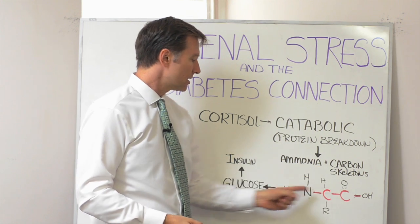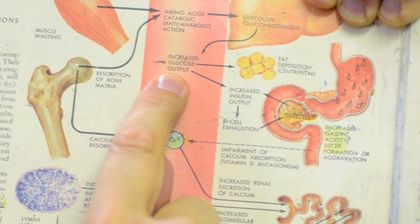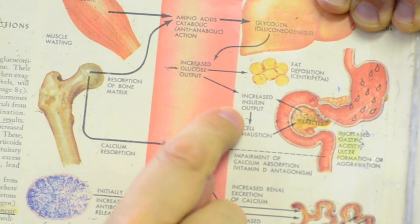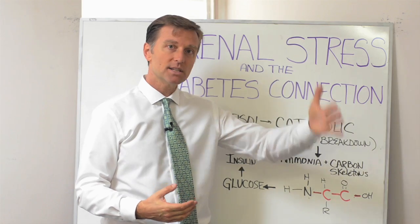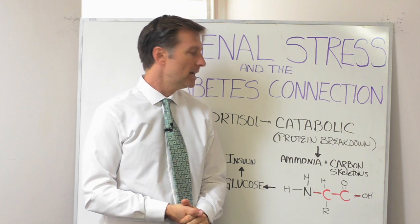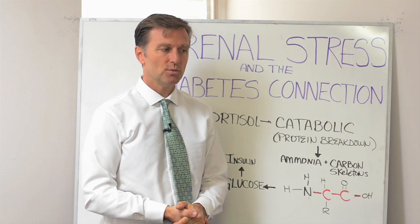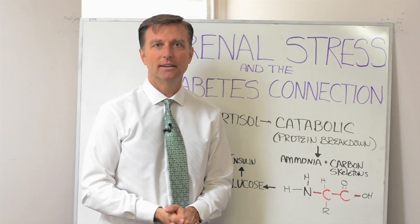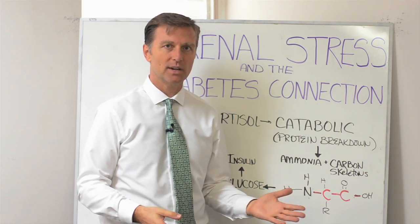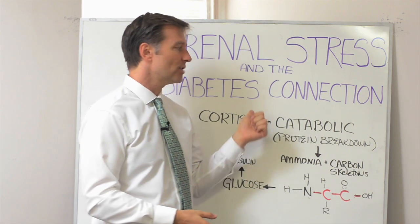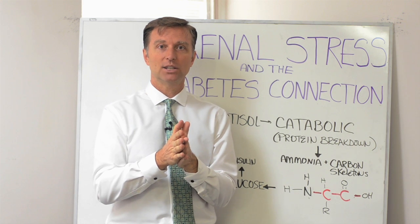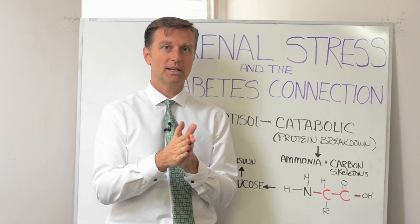Those carbon skeletons are then converted into glucose, thereby raising your insulin. So now you get this spike of insulin, which creates insulin resistance, pre-diabetes, or actual diabetes itself. This is a situation where you're eating well but you're still under stress and you get diabetes. Or you're trying to get rid of your insulin problems or lose weight — it's the stress. Stress is one big, huge factor, and I see this a lot.